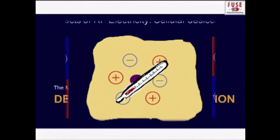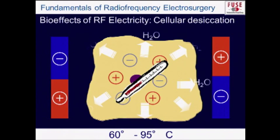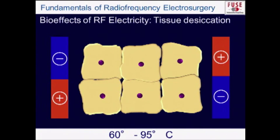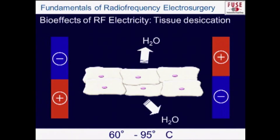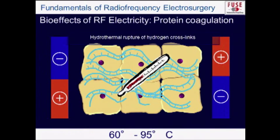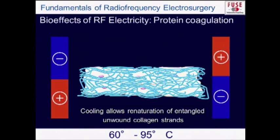If temperature doesn't reach 100°C, the cell still heats up but retains some integrity. It begins losing water and shrinks — on a macro level, tissue visibly contracts. Additionally, there is protein in the cell: hydrothermal rupture of hydrogen crosslinks occurs, and upon cooling, those crosslinks reform. The result is shrunken, desiccated, coagulated tissue — resulting from desiccation and protein coagulation. This protein reformulation is critical for forming vessel seals.